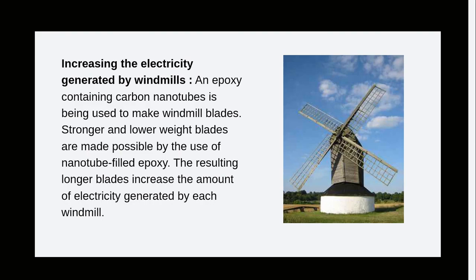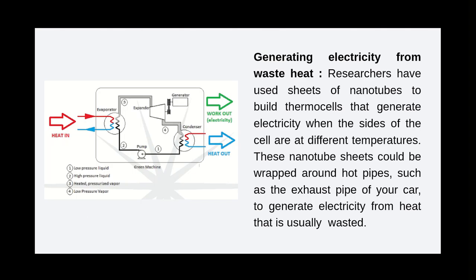Increasing the electricity generated by wind mills: an epoxy containing carbon nanotubes is being used to make wind mill blades. Stronger and lighter blades are made possible by the use of nanotube-filled epoxy, and the resulting longer blades increase the amount of electricity generated by each wind mill. Generating electricity from waste heat: researchers have used sheets of nanotubes to build thermocells that generate electricity when the sides of the cell are at different temperatures. These nanotube sheets could be wrapped around hot pipes such as the exhaust pipe of a car to generate electricity from heat that is usually wasted.